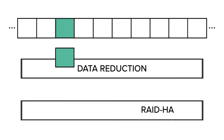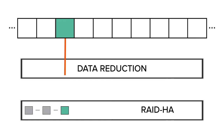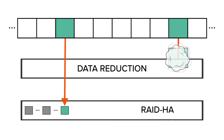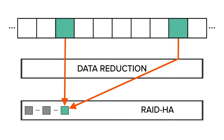Incoming data is compressed and written to flash storage with enough parity to reconstruct it even if two drives fail. If the same data is written elsewhere, this simply becomes a second mapping to the same storage.